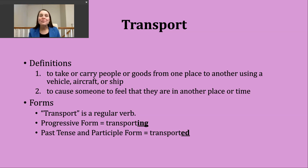You should know the verb transport is a regular verb. To make the progressive form, all we need to do is add -ing to form 'transporting.' The past tense and participle form can be made by just adding -ed. Our base verb transport ends with a T sound, so our past tense ending is going to make an -id sound. We add an extra syllable: 'transported.'